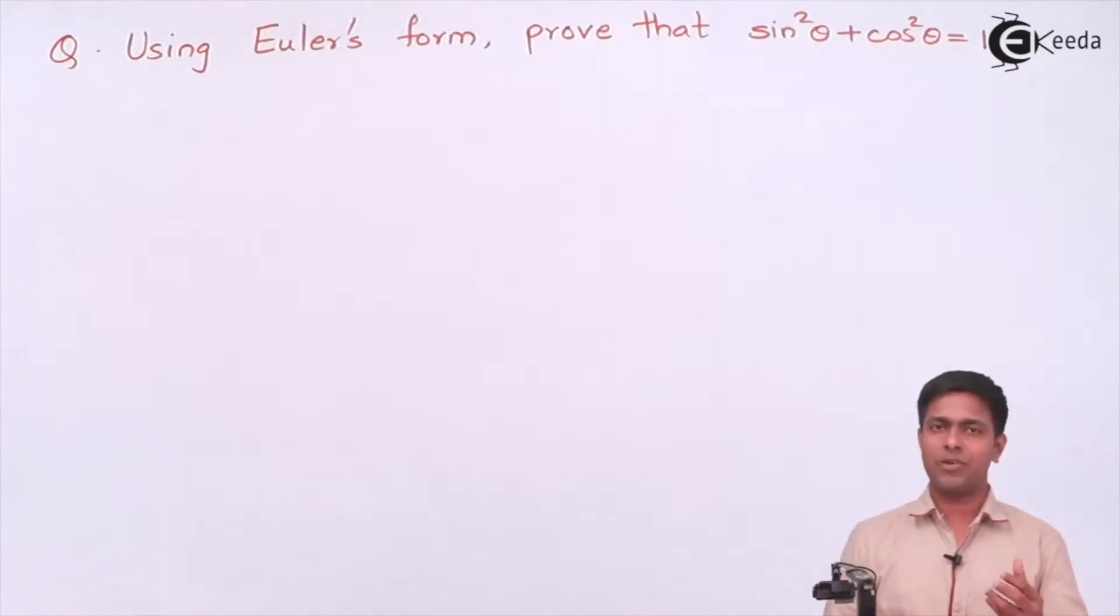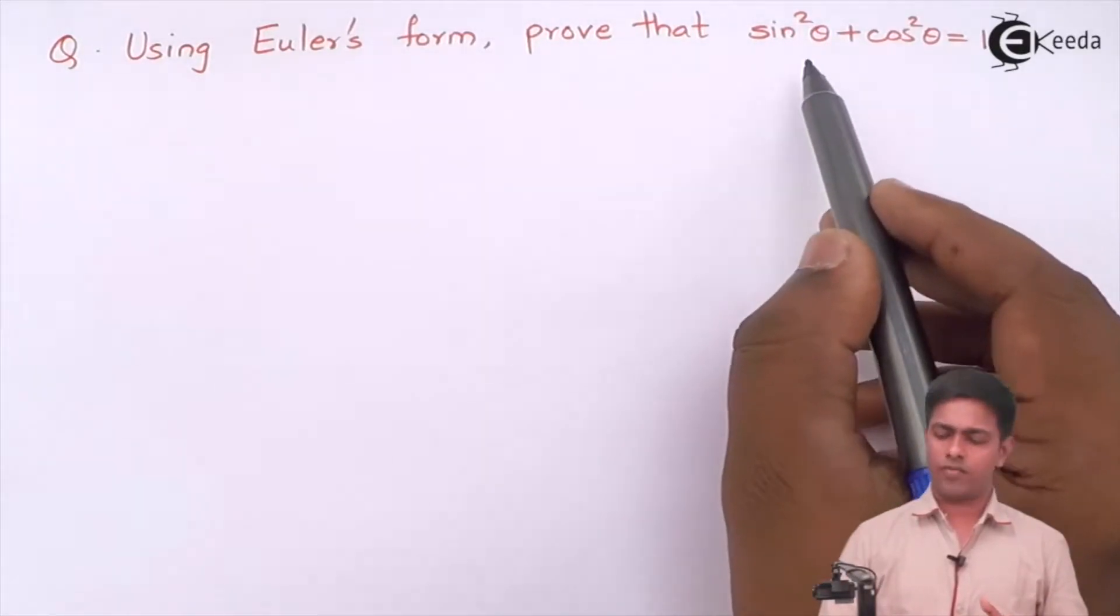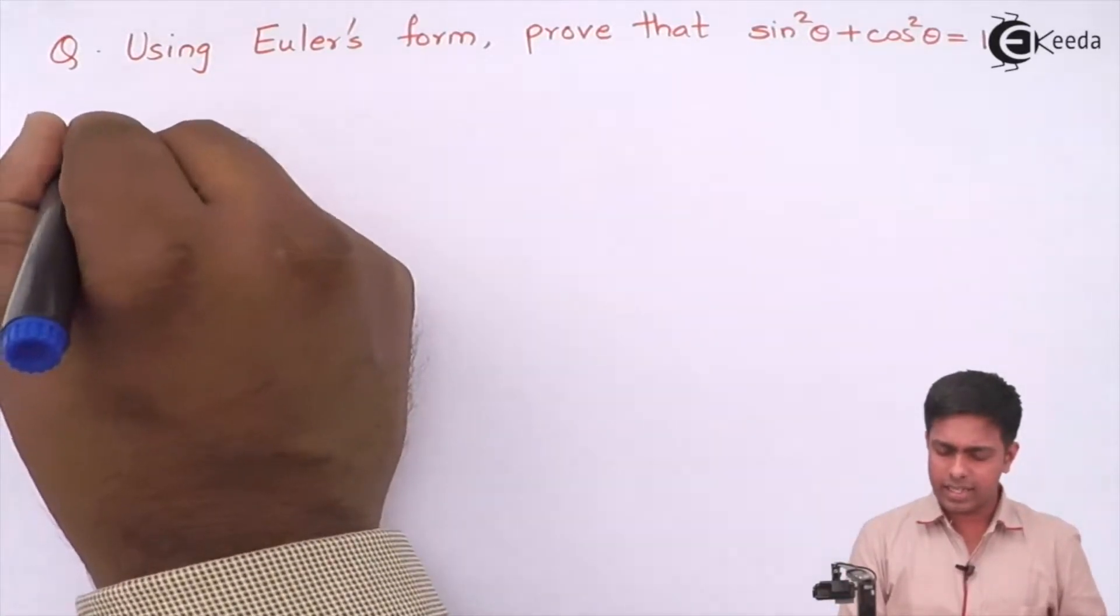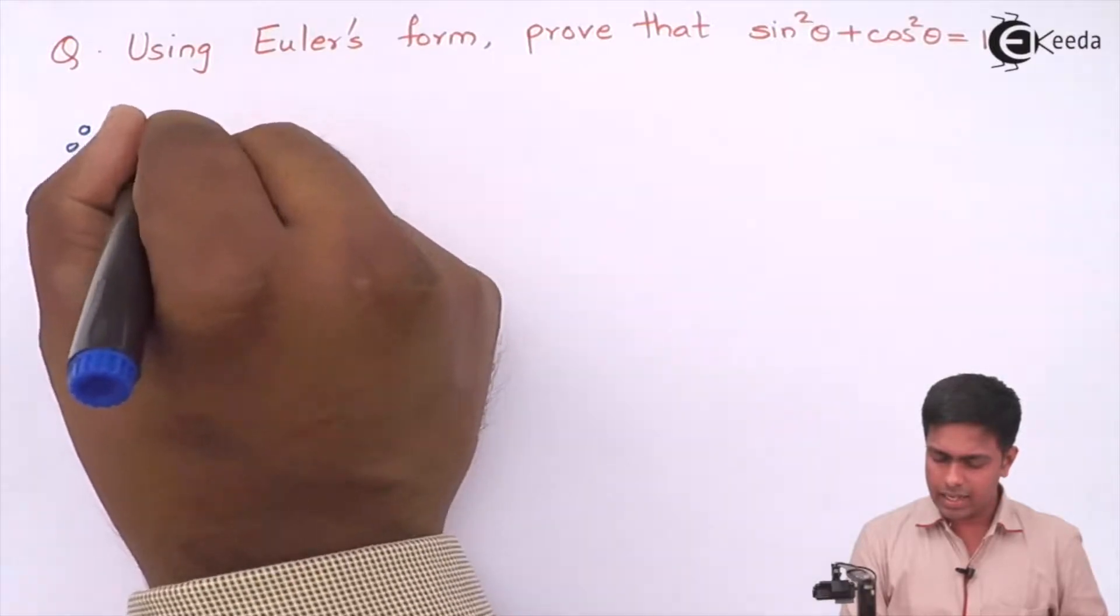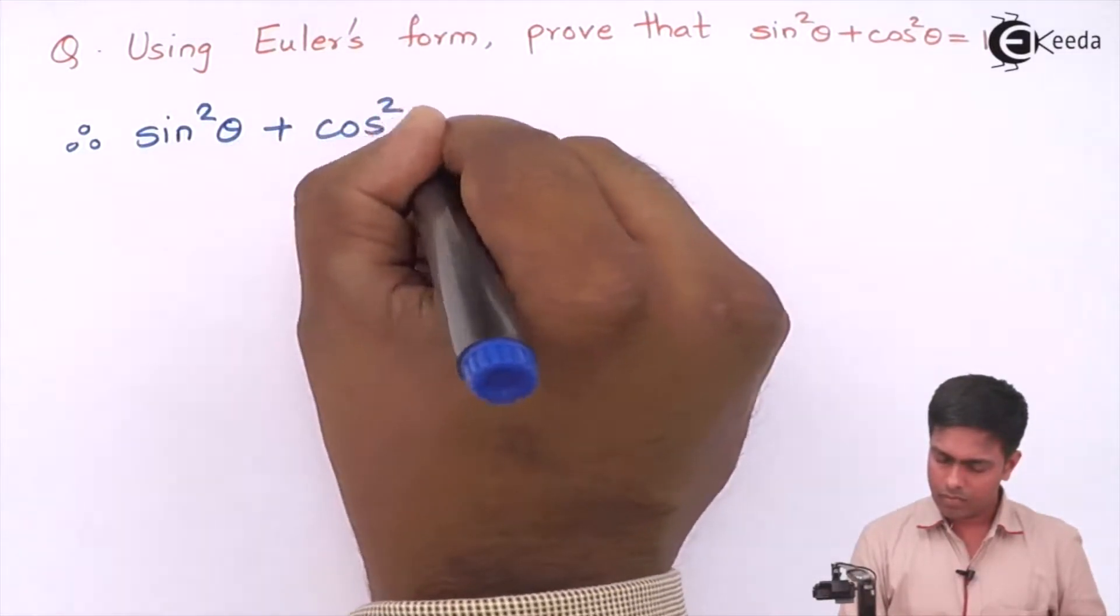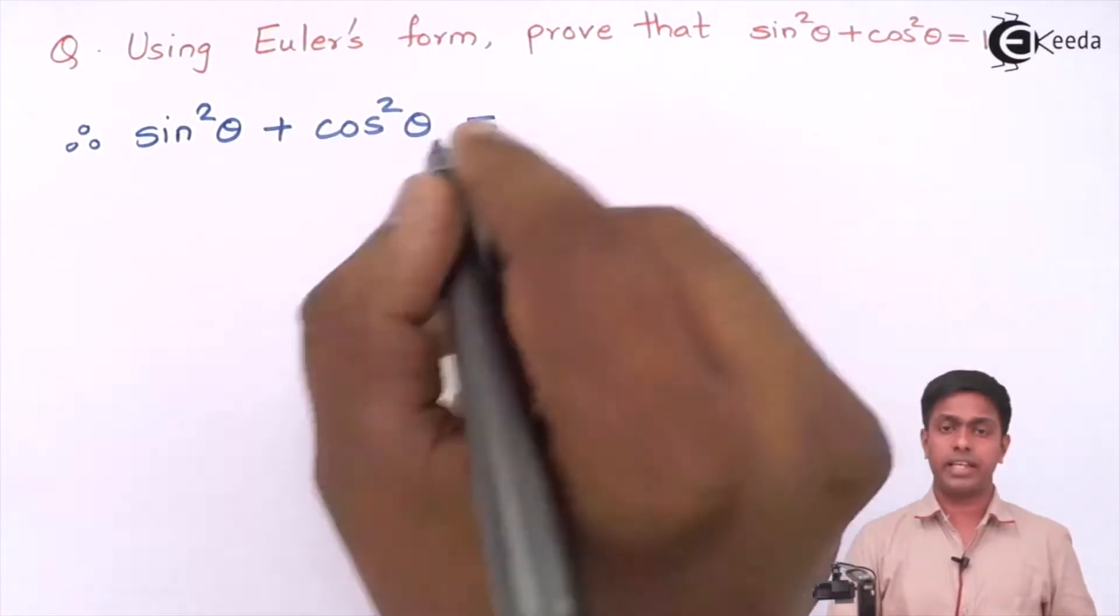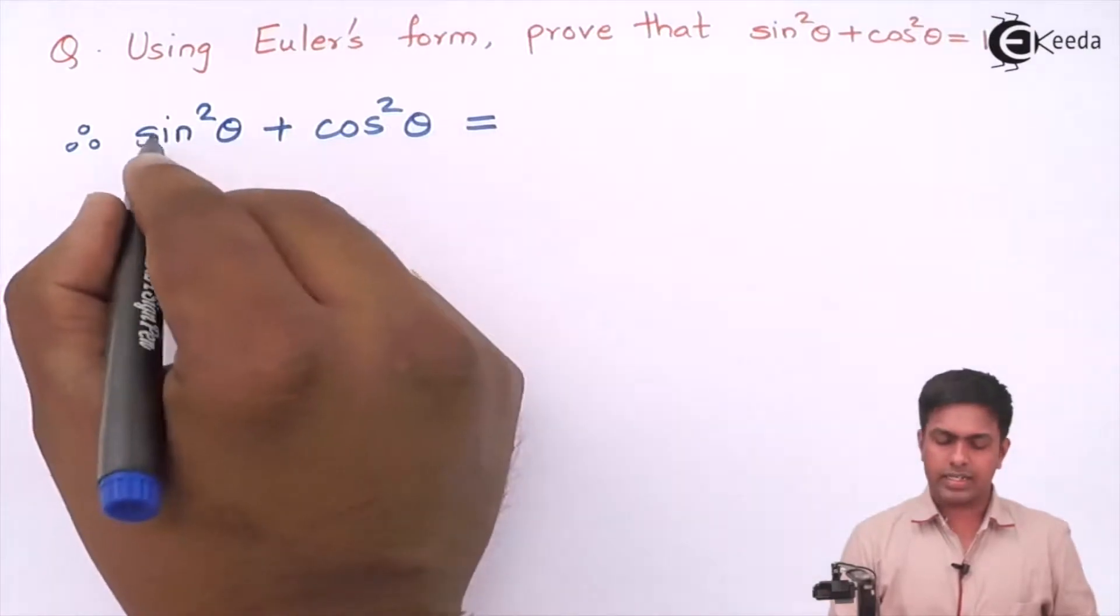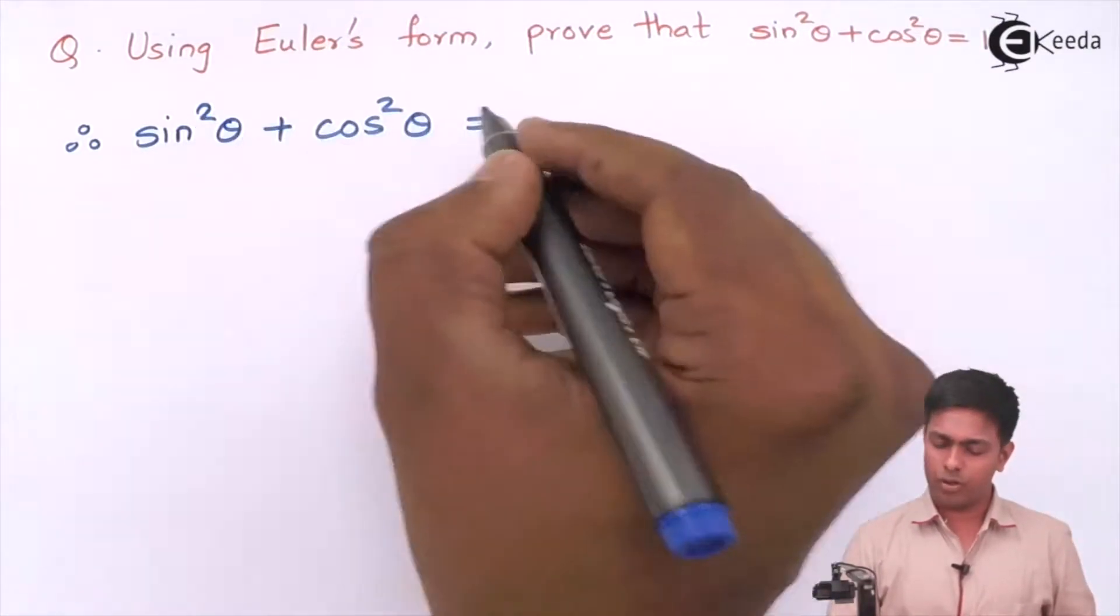Since we know that Euler has given us the relationship between trigonometric functions and exponential functions, we will first of all write down the value of sine theta and cosine theta in terms of exponential function. So let's start. Therefore, sine square theta plus cosine square theta equal to, let's write down the Euler's form.